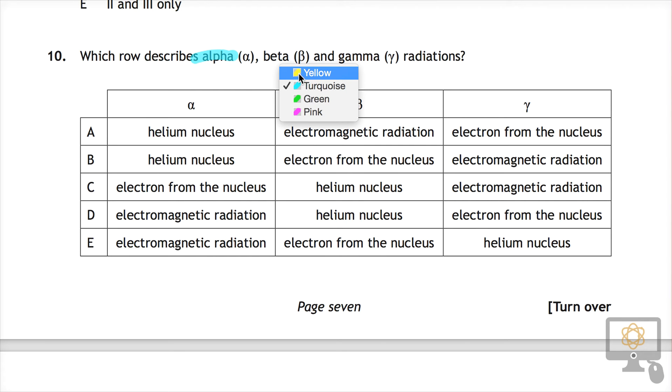So let's just choose—I can't get this to work today. There we are, beta is yellow and gamma, let's see, we'll go for green. Not that these radiations are these colours, I'm just highlighting them in different colours.